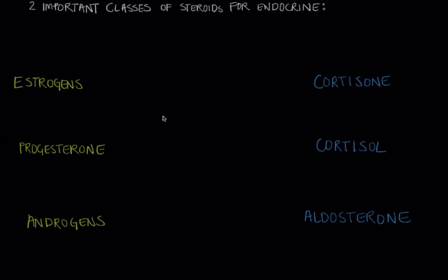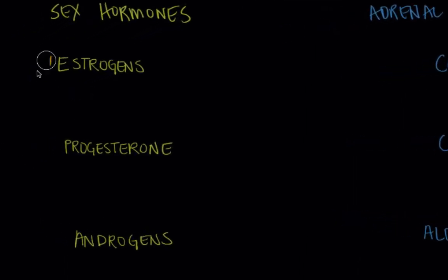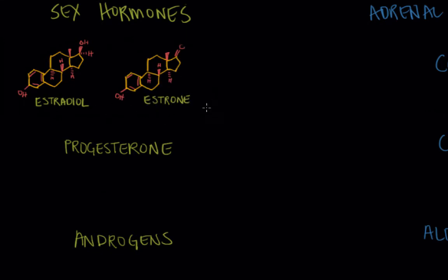I mentioned before that there are two important classes of steroid hormones in the body and those are the sex hormones and the adrenal cortex steroids. With the sex hormones I mentioned before estrogens. We have estradiol and estrone and you can see their steroid backbone and those are predominantly made in the ovaries and they are principally involved in secondary sex characteristics for females.